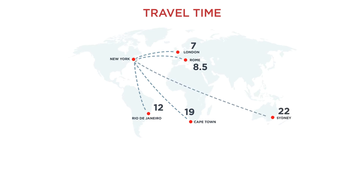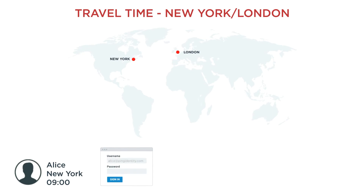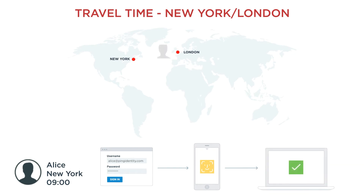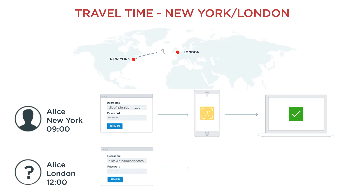In a phishing attack, for example, a fraudster obtains your credentials and uses them to log in from another country. A GeoVelocity Anomaly is one way to help identify such an occurrence. So if Alice logged in at 9am this morning in New York and we see her appear to log in again from London at midday, that's a sure warning sign that the login from London is suspicious.